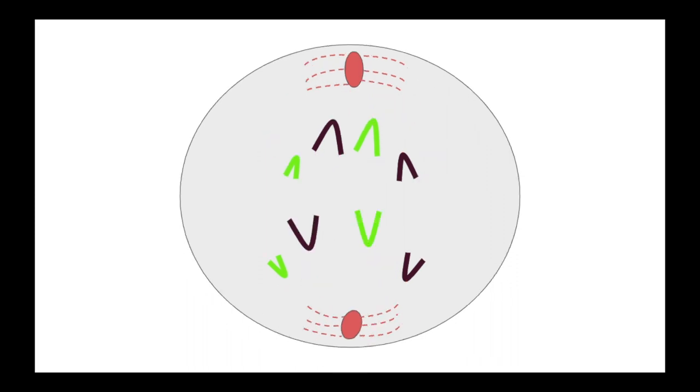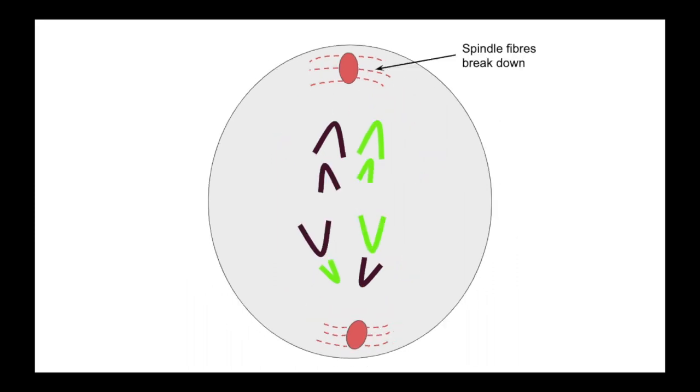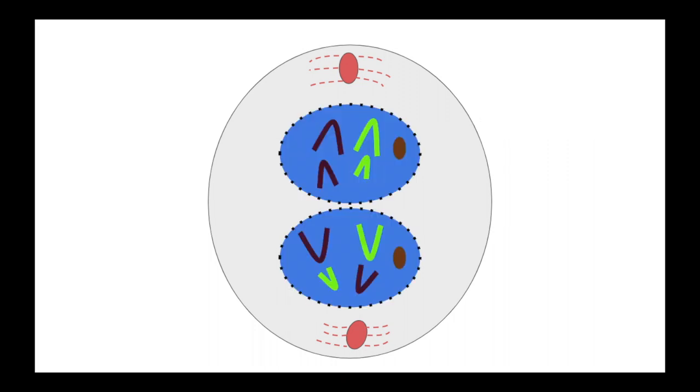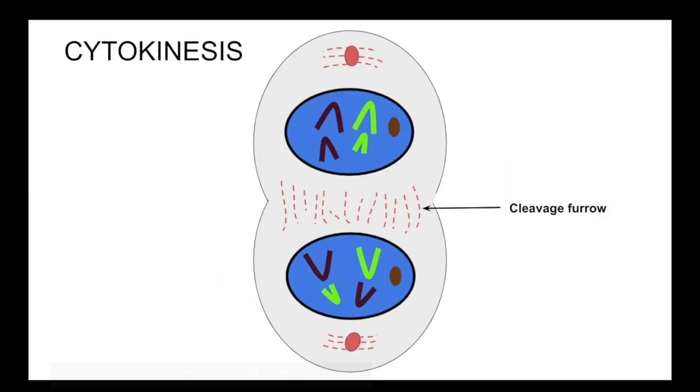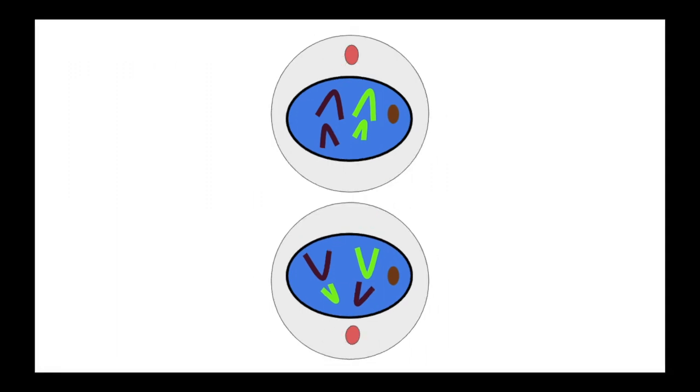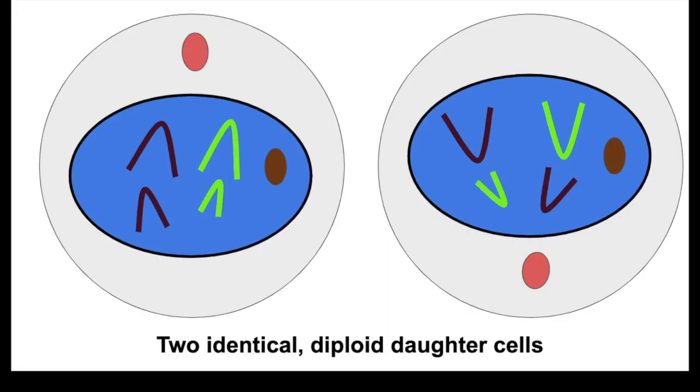When at opposite poles, telophase occurs and the spindle fibres break down while the nuclear membrane reforms around the newly formed daughter nuclei and nucleolus. Cytokinesis then forms a cleavage furrow that divides the cytoplasm, separating daughter nuclei into their own individual cell.